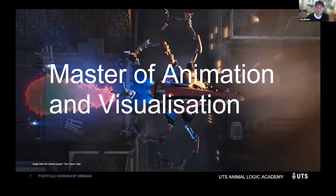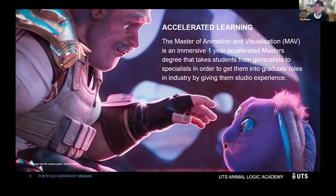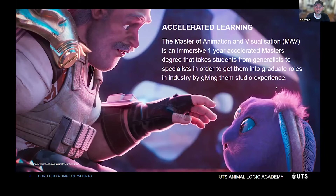The Master of Animation and Visualisation, or the MAV — it's an accelerated one-year master's degree. Most master's degrees tend to go for about a year and a half. We really speed ours up. We give our students a look at what it's like in industry. We set up our degree and studio to replicate the industry — nine to five, five days a week — using the same tools, pipeline, and processes as if you were at Animalogic or ILM. Dailies in the morning, rounds in the afternoon. So when students graduate, they can hit the ground running.